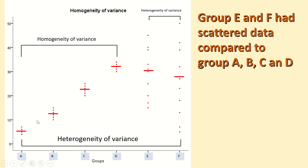As we can see, in groups A, B, C, and D the scatter or spread of the data is nearly homogeneous. However, if we look at groups E and F, the spread of the data values is heterogeneous — widely spread away from the mean. So groups E and F are heterogeneous for variance, while groups A, B, C, and D are homogeneous.